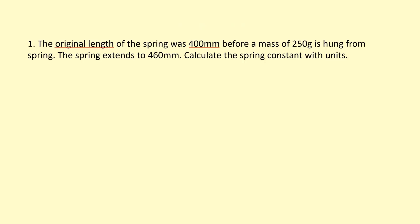The original length of a spring is 400 millimeters before a mass of 250 grams is hung from the spring. The spring extends to 460 millimeters. Calculate the spring constant with units. Firstly, we can calculate the extension by the change in length here. Times that by 10 to the minus 3 to turn it into meters.